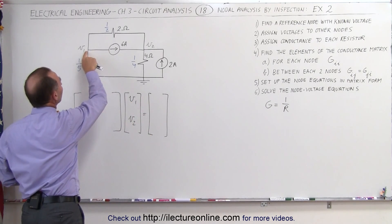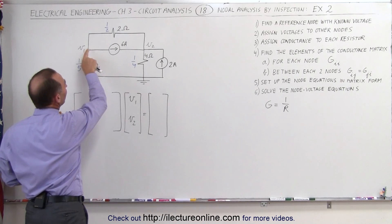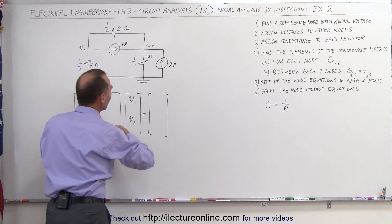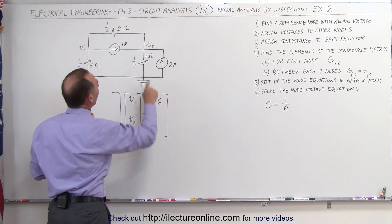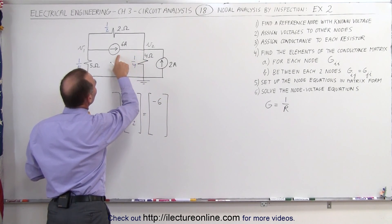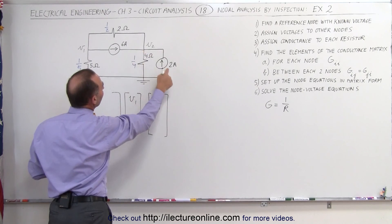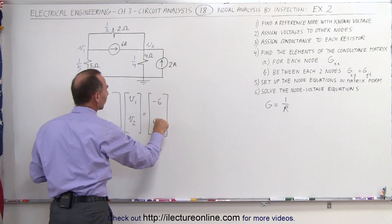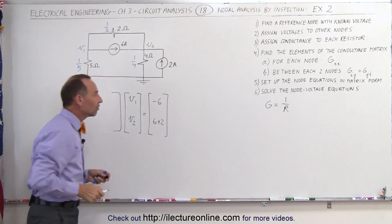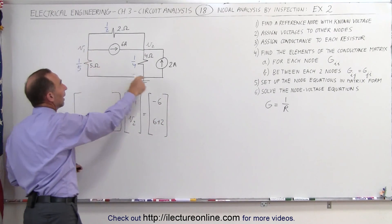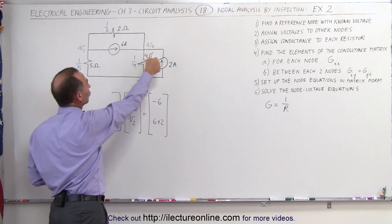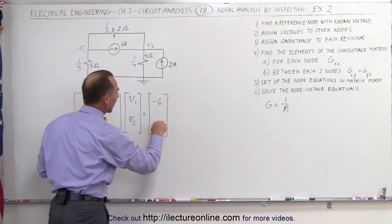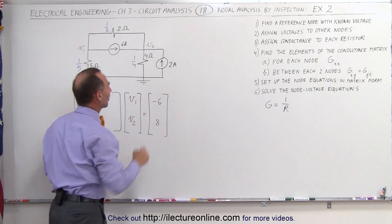For node 1, we have 6 amps leaving that node, so the current entry is minus 6. For node 2, we have 6 amps entering and 2 amps entering from the other side — that's 6 plus 2, or 8. So the current matrix is minus 6 for node 1 and plus 8 for node 2.